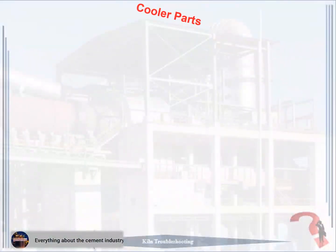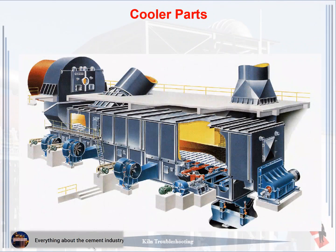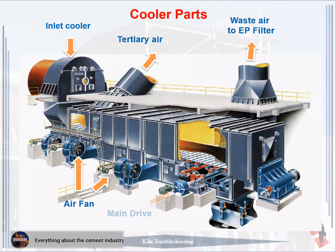The cooler consists of main parts. This picture shows the main spare parts for the cooler — they vary according to the type of cooler but the basics are constant: one, inlet cooler; two, outlet for tertiary air cooler; three, outlet for waste air to EP filter; four, air fan; five, main drive; six, grate plate; seven, crusher; eight, conveyor under cooler.